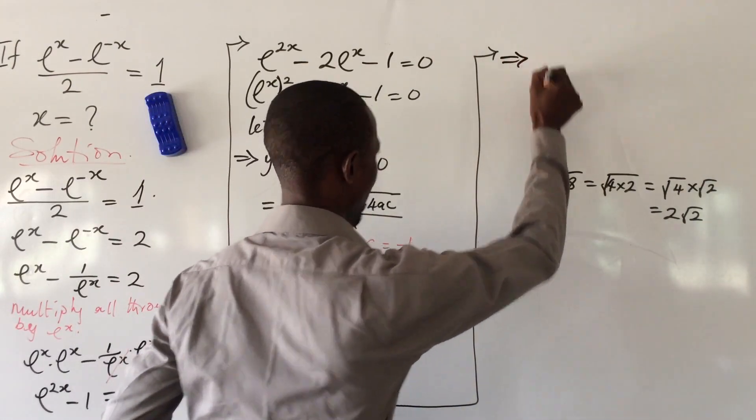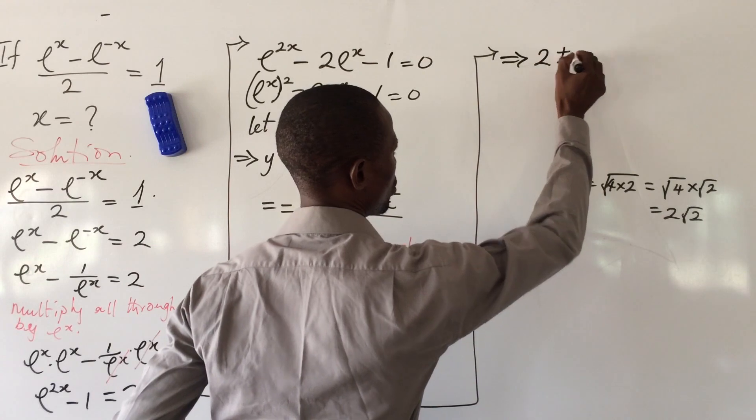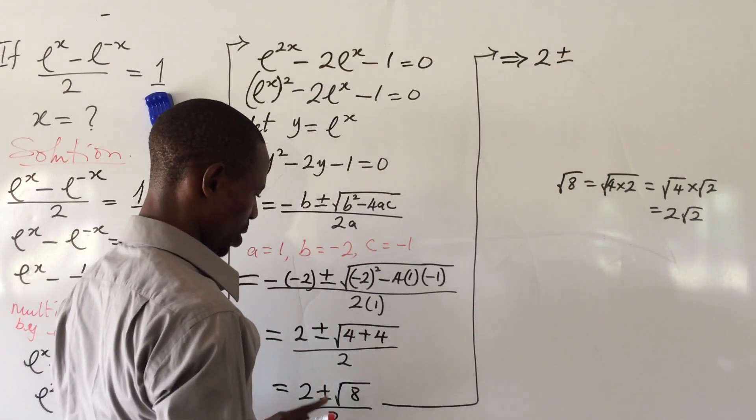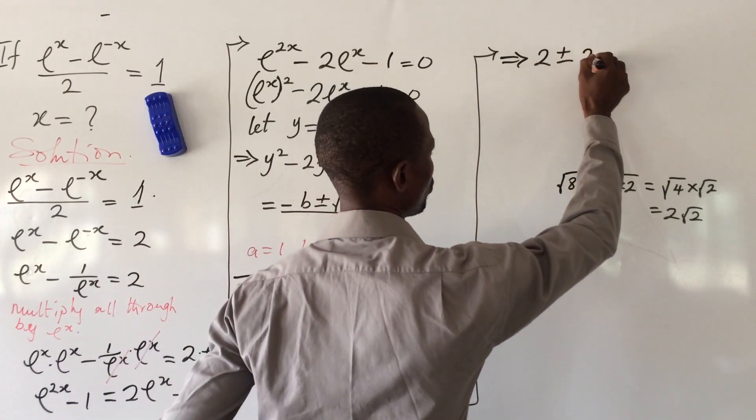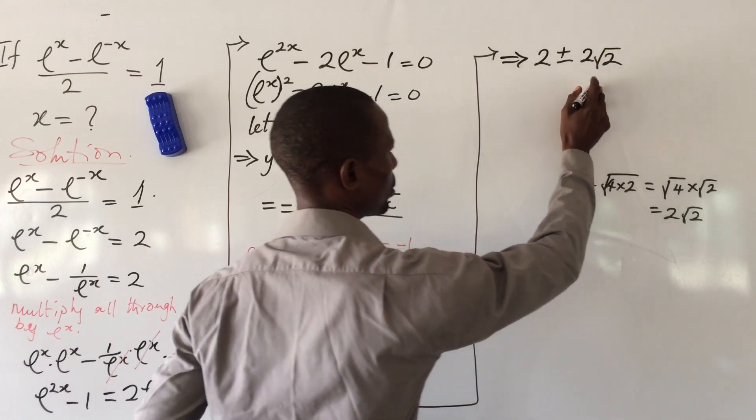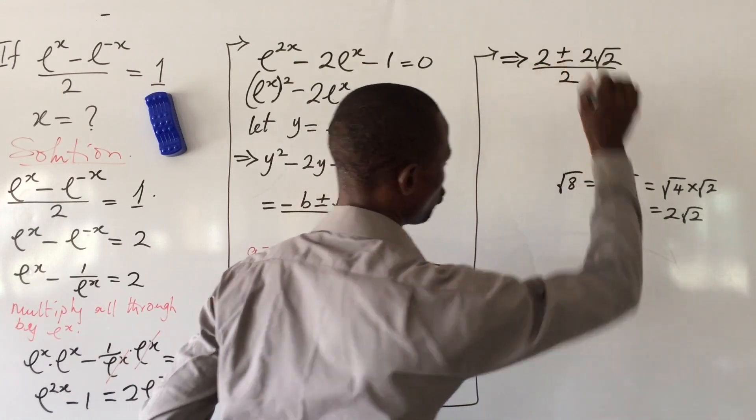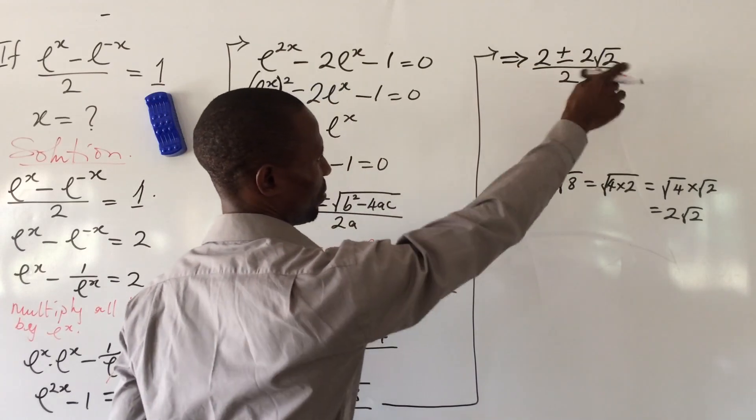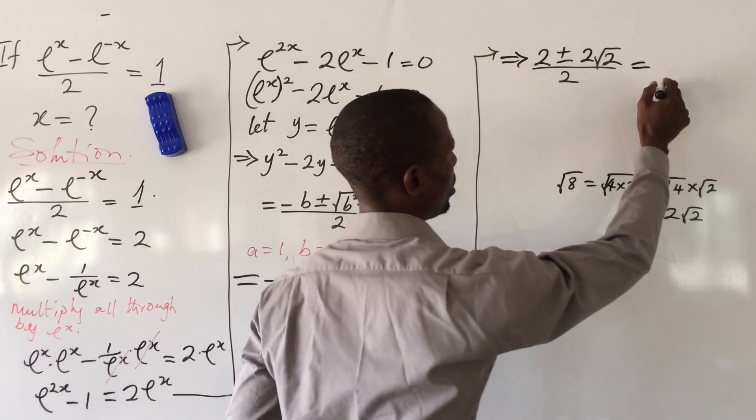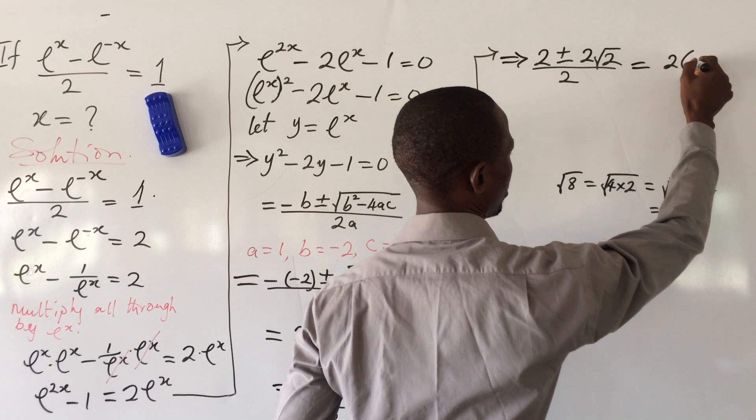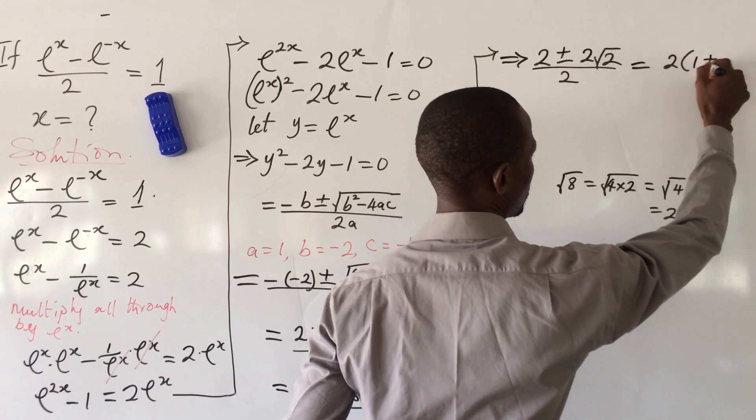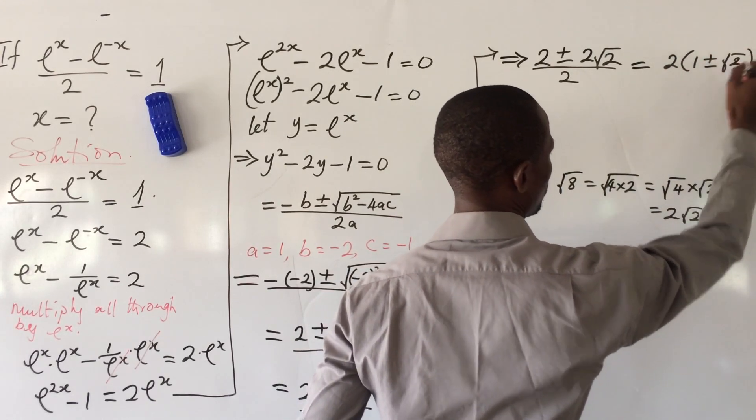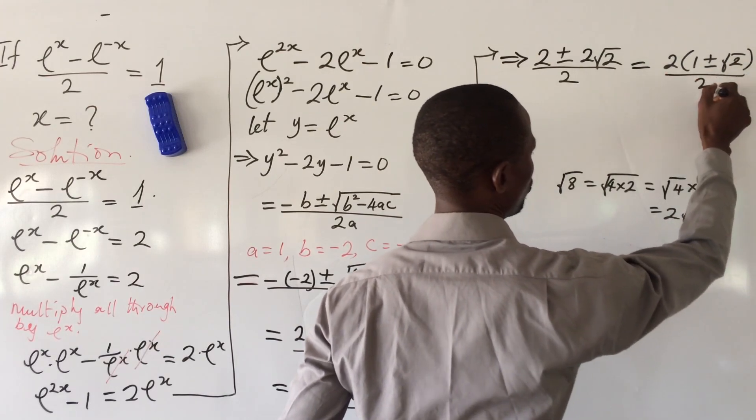If we compute that into this system, this now implies 2 plus minus 2 root 2, all over 2. We can factor out 2, giving us 2 bracket 1 plus minus root 2 close bracket, all over 2.